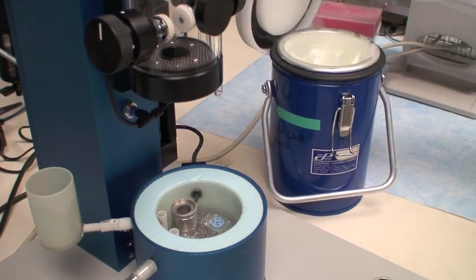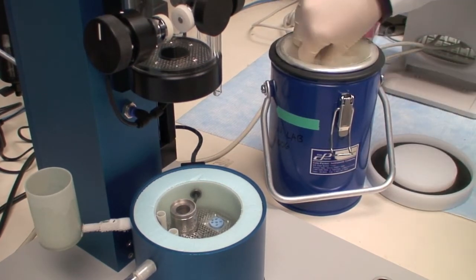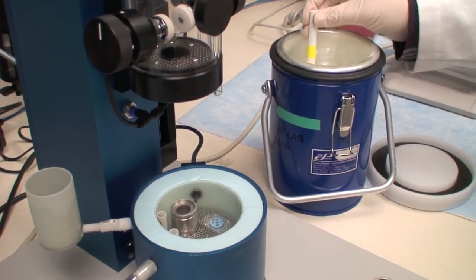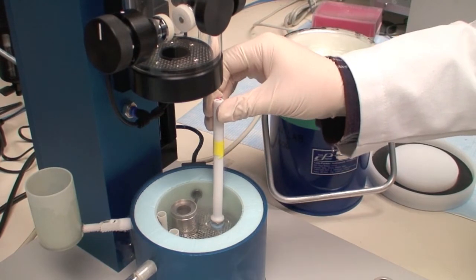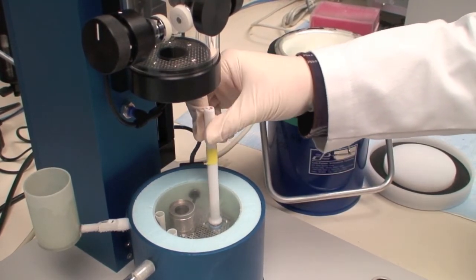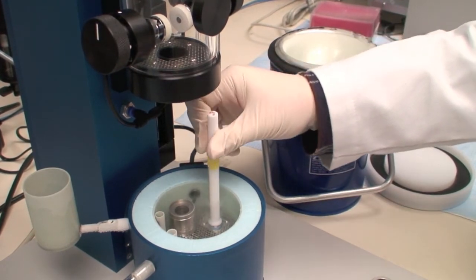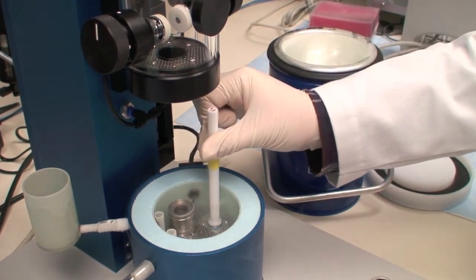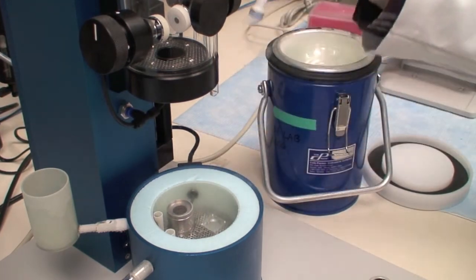Once you are finished freezing your samples, close the blue cryo grid storage box. Immediately transfer into the dewar filled with clean liquid nitrogen.